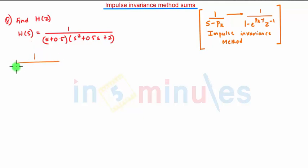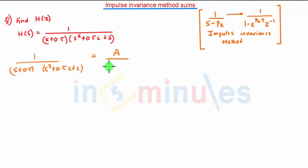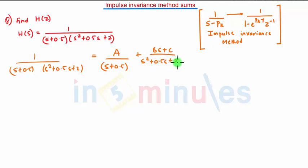This expression can be expressed as (s + 0.5) / (s² + 0.5s + 2), which is equivalent to A / (s + 0.5) plus (Bs + C) / (s² + 0.5s + 2). So this is the equation. Let us obtain the values of A, B, and C.